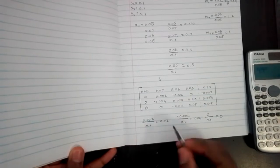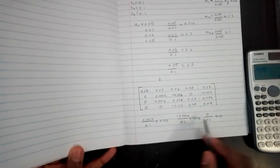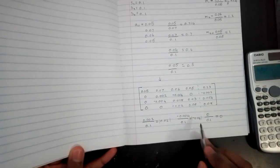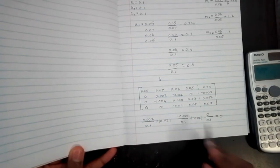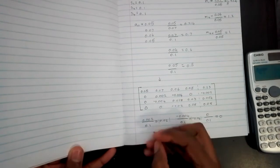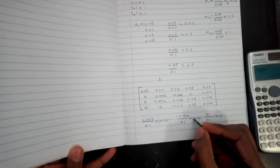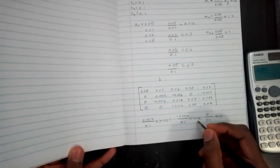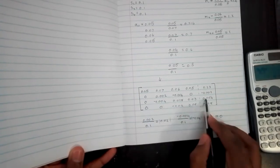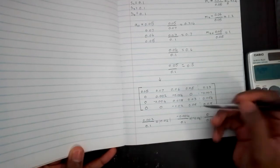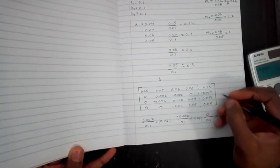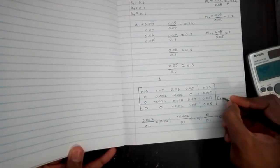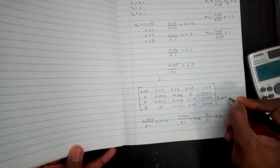And then we compare which one is the biggest. We take absolute values to compare them. So neglecting the negative sign, the largest value is 0.04, which means the third row is bigger than the second row.